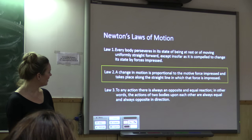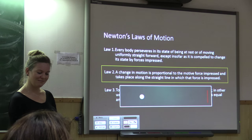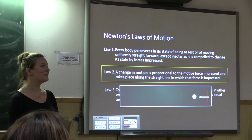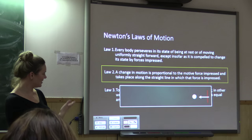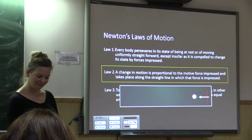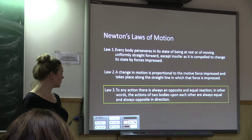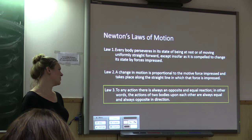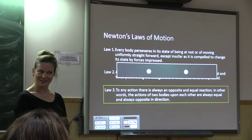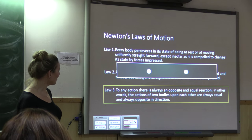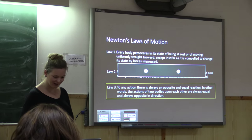Law two: the change in motion is proportional to the motive force impressed, and takes place along the straight line in which that force is impressed. This tells us what kind of thing that second force is going to do. Law three: to any action there is always an opposite and equal reaction — in other words, the actions of two bodies upon each other are always equal and always opposite in direction. Another way of thinking about law three: if I press down on this table, the table presses back up at me.